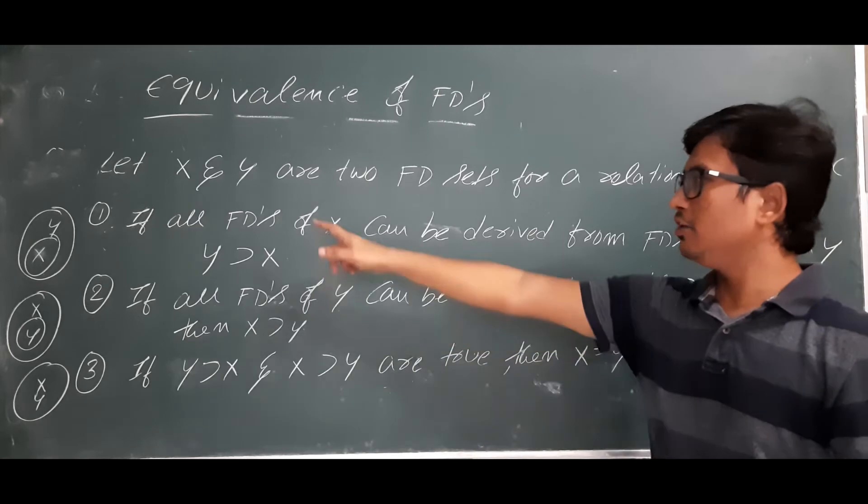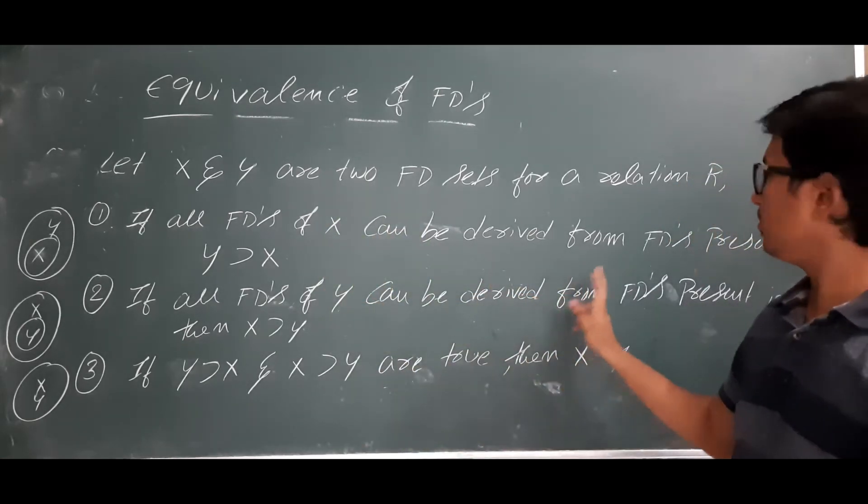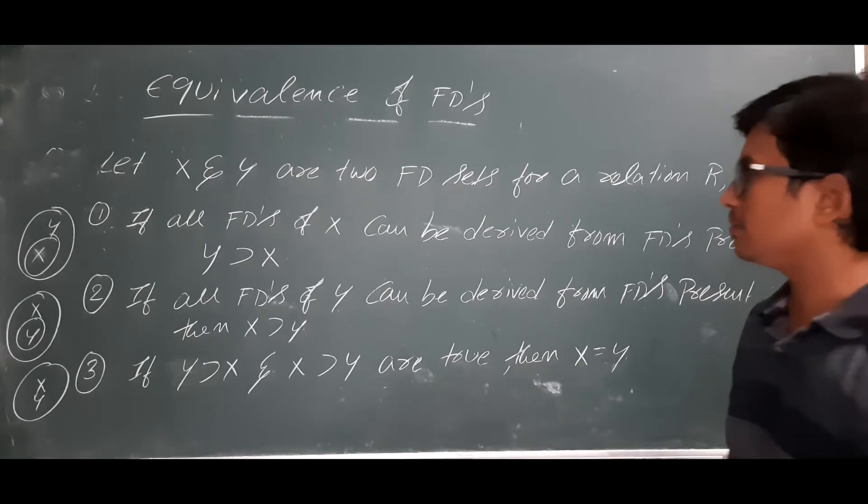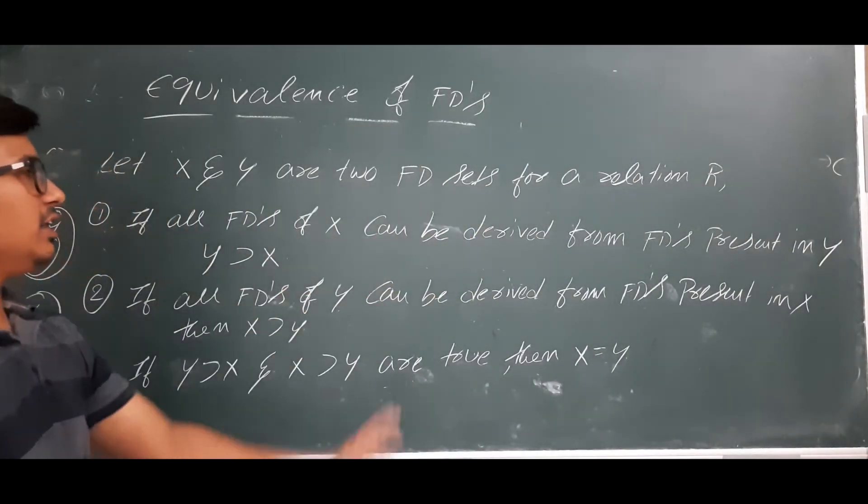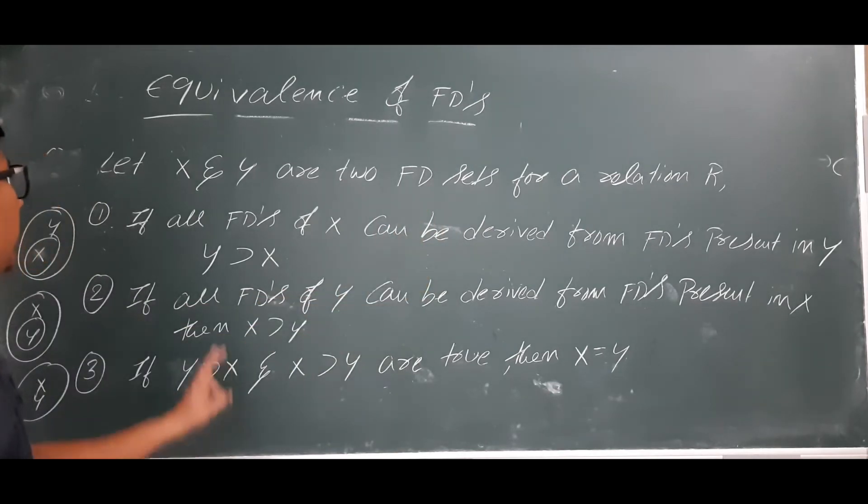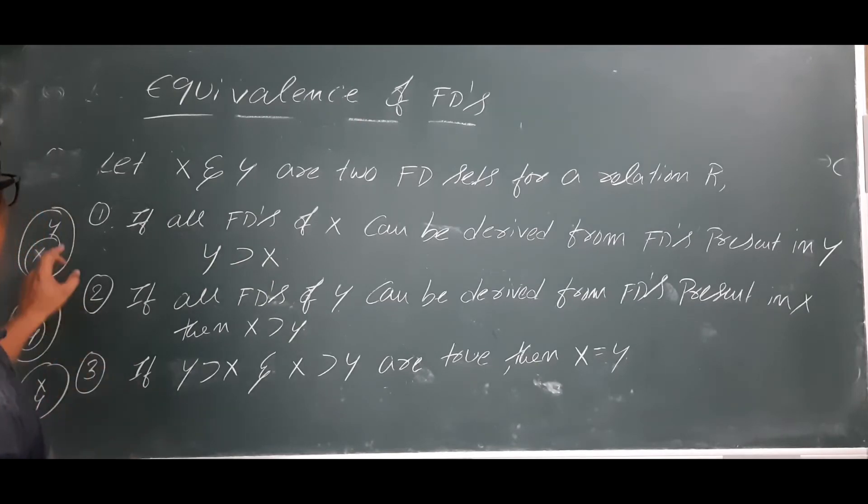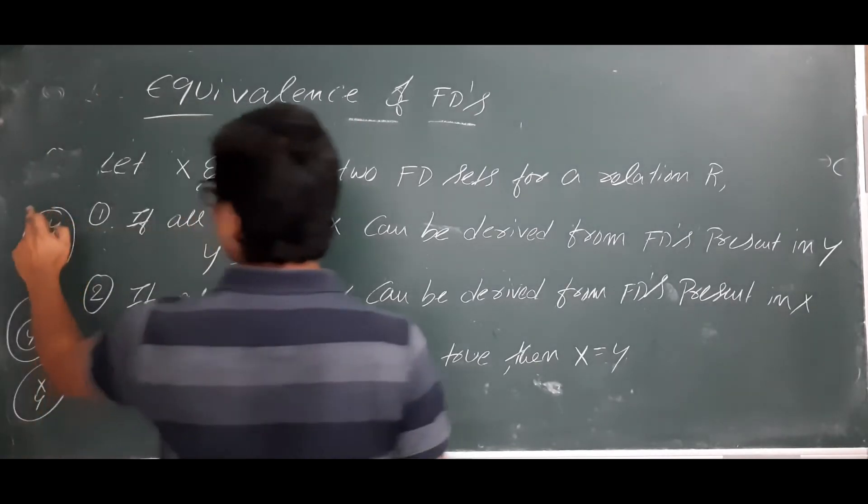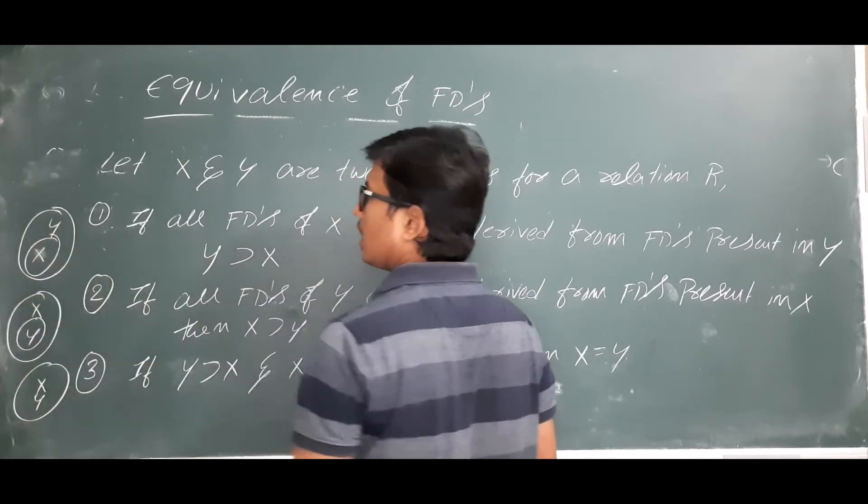If all FD's of X can be derived from the FD's present in Y, then I can say that Y covers X. This will be represented like this: Y covers X. The meaning is that all the FD's of X are there in Y itself. That is step one.